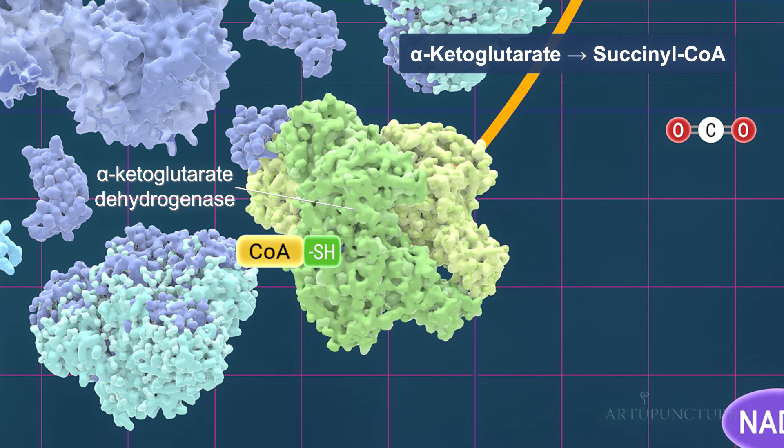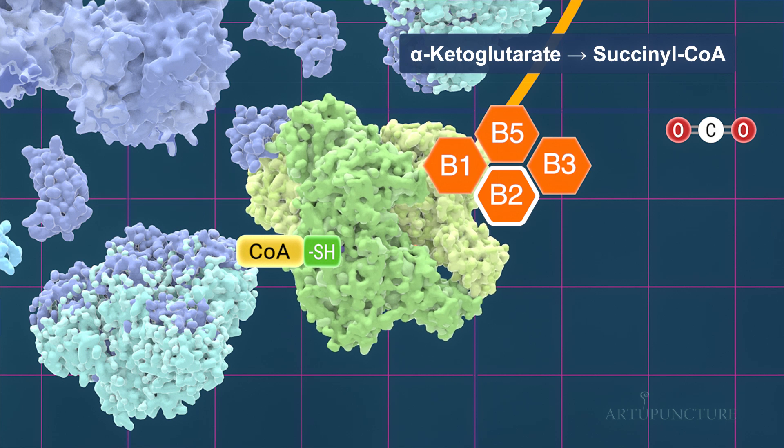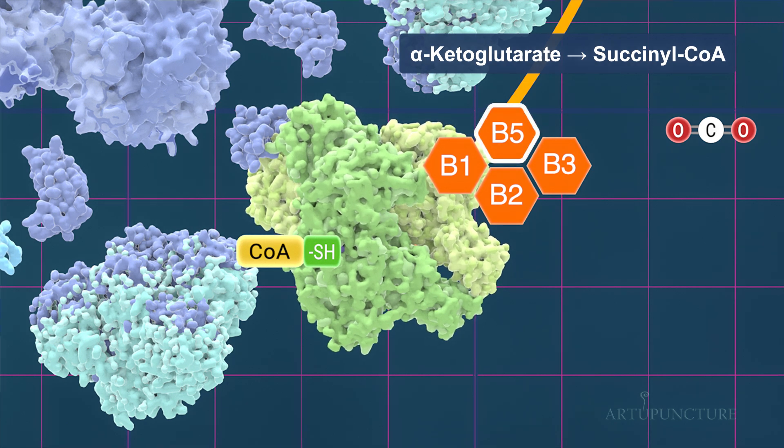Vitamin B1, thiamine, aids in the decarboxylation process. Vitamin B2, also known as riboflavin, forms part of FAD, which is reduced to FADH2. Vitamin B3, niacin, is involved in forming NAD, which is reduced to NADH. Finally, vitamin B5, pantothenic acid, is a component of coenzyme A.